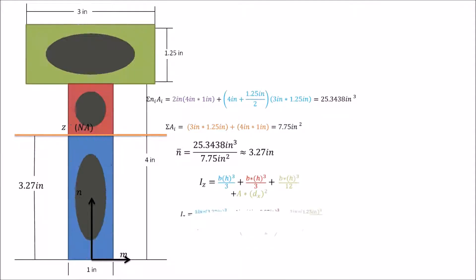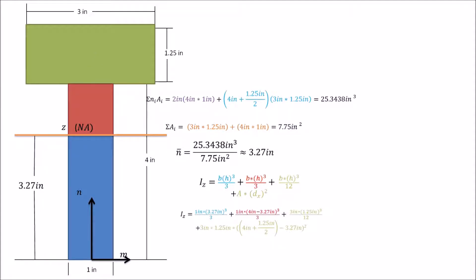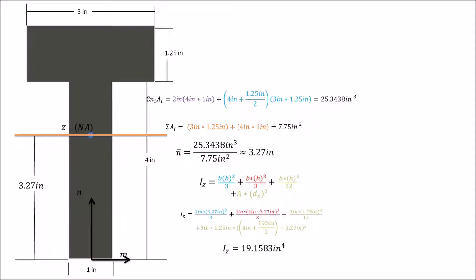Now we'll calculate the moment of inertia about the z-axis. We break the section into three rectangular parts — blue, red, and green. For the blue and red parts, since they stand vertically touching the neutral axis, we use bh³/3. For the green part, we use bh³/12 plus the parallel axis theorem term A·dx². Plugging in all values and incorporating the A·dx² term for the green rectangle, we find Iz is approximately 19.1583 inches to the fourth.